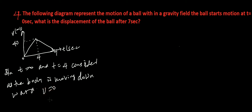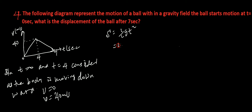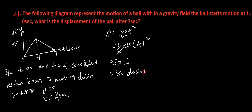Initial velocity is zero. Finally, 4 meters per second. S is equal to one half gt squared. One over two times ten, this is four, the whole square. This is five times sixteen, which equals eighty. Consider the direction as downward.